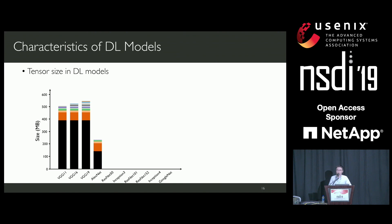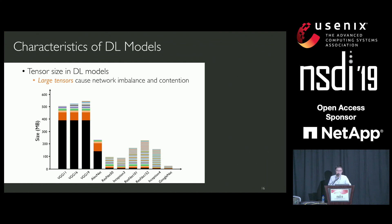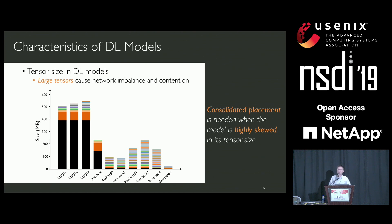For all the VGG models and AlexNet models, they are highly skewed in their tensor size distribution, and the largest tensor occupies the majority of the model's space. However, for the remaining six models, tensor sizes are more evenly distributed. In distributed training, the amount of data transferred among job components is determined by tensor size. So if the job is not consolidated, large tensors can cause network imbalance and make contention worse, slowing down training performance.